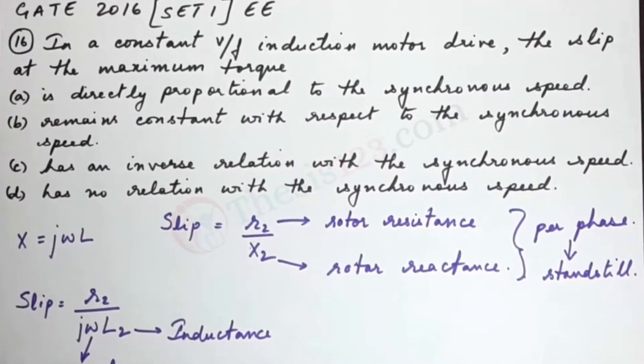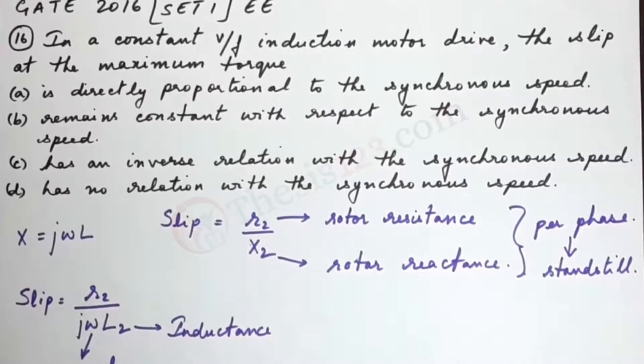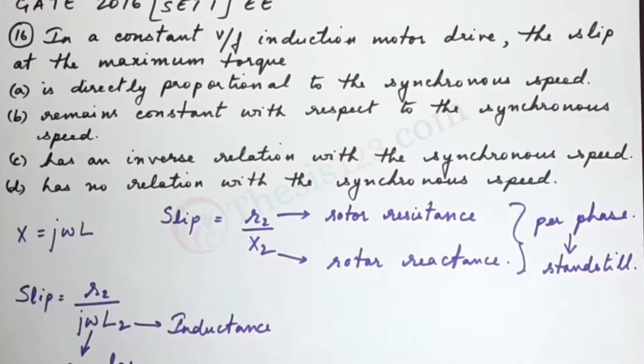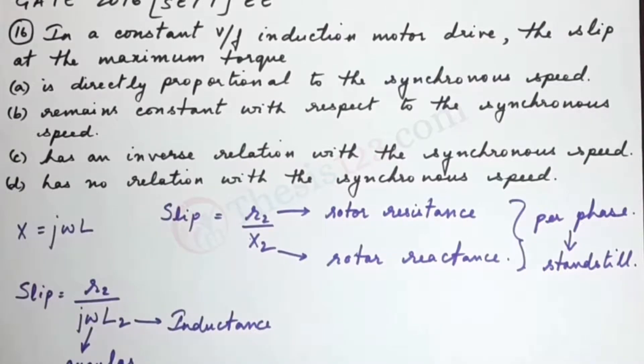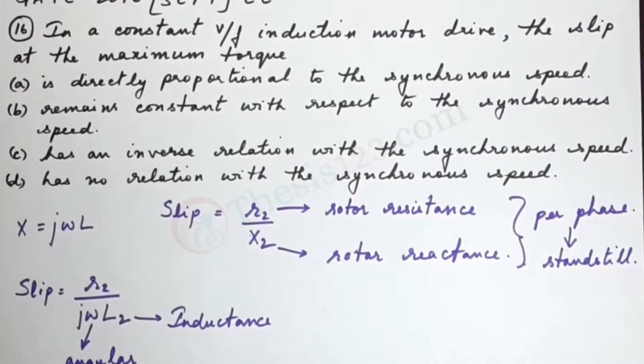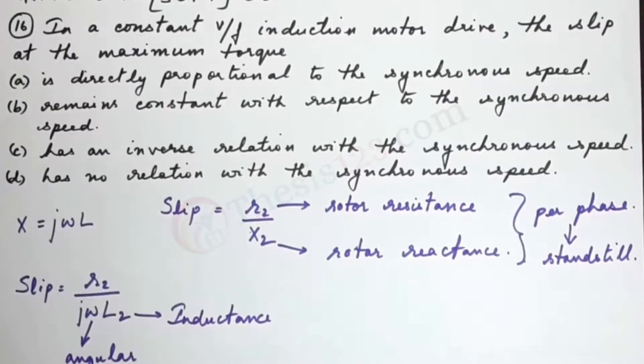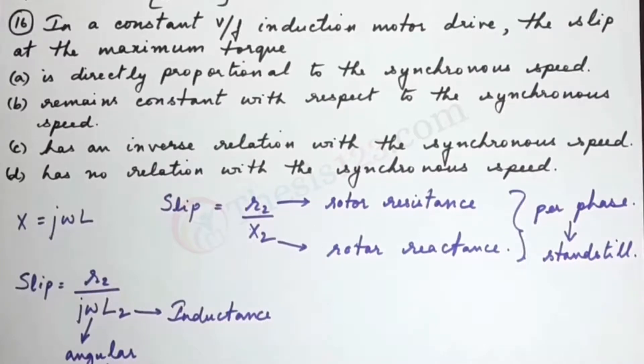This is question number 16. In a constant V/F induction motor drive, the slip at the maximum torque: (a) is directly proportional to the synchronous speed, (b) remains constant with respect to the synchronous speed, (c) has an inverse relation with the synchronous speed, or (d) has no relation with synchronous speed. We need to know the relationship between maximum torque and synchronous speed.